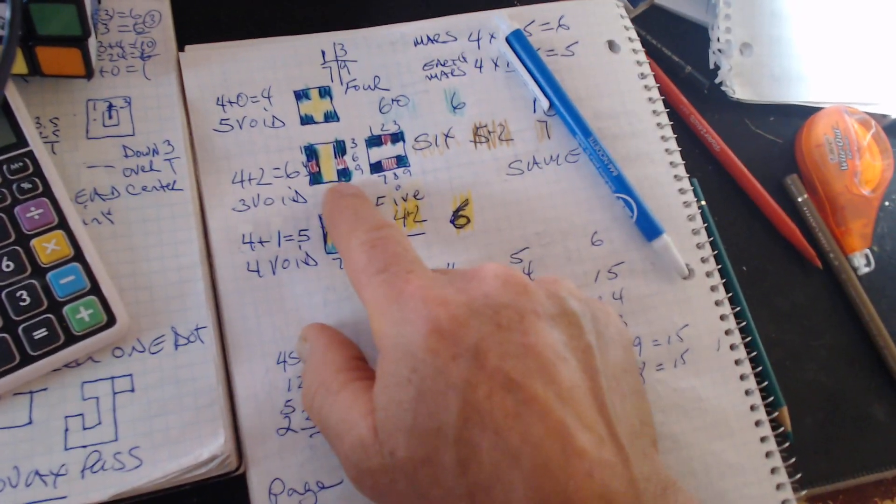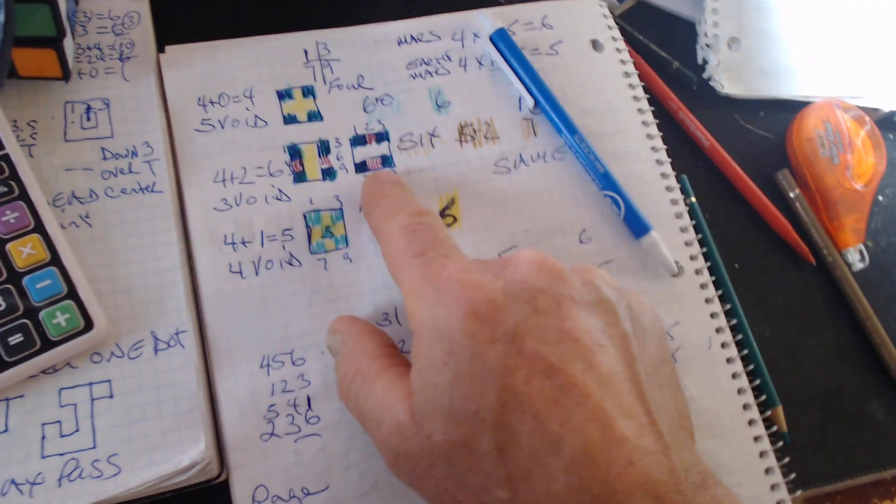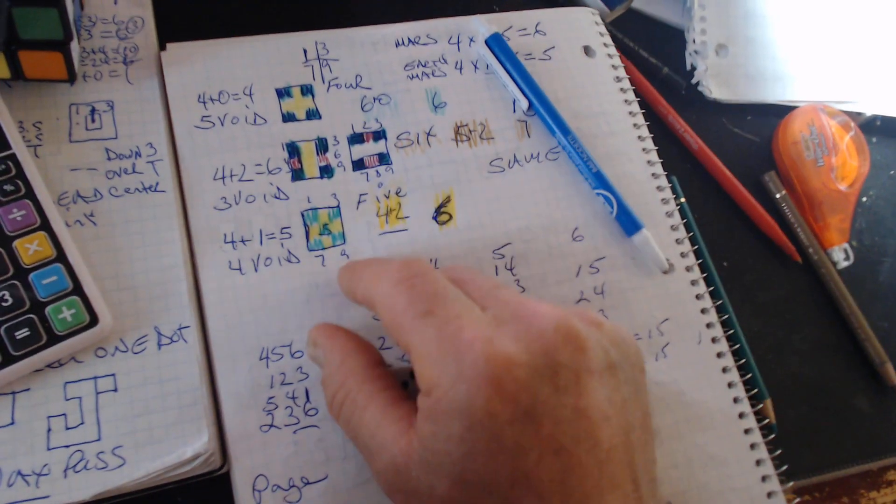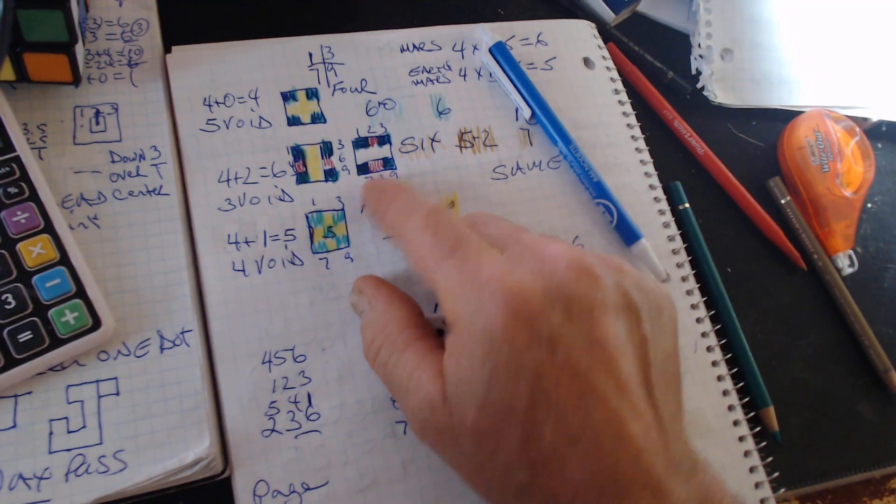Here it's the one, four, seven with three, six, nine in the H position. In the I position, it's ABC with seven, eight, and nine.